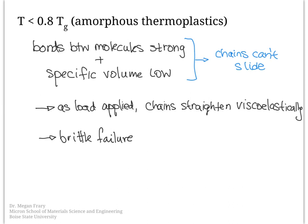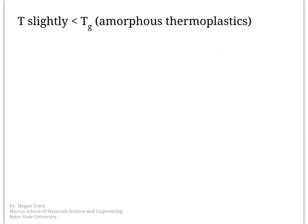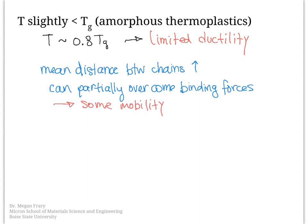As the temperature gets a little bit higher, more plastic deformation can begin to occur. At a temperature of about 0.8 of the glass transition temperature, amorphous thermoplastics have some limited ductility. This ductility results from the fact that the mean distance between chains is larger, enabling them to partially overcome the binding forces and giving the molecules at least some mobility. Unlike metals, polymers do not work harden during plastic deformation because no new obstacles are created as the molecules slide past one another.